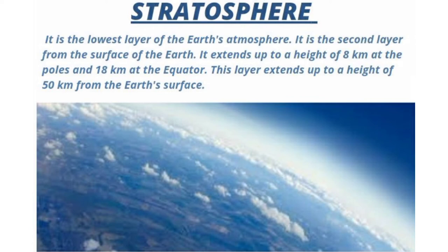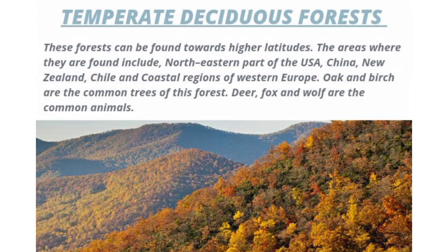Temperate deciduous forest. These forests can be found towards higher latitudes. The areas where they are found include the northeastern part of USA, China, New Zealand and coastal regions of western Europe. Oak and birch are common trees of this forest. Deer, fox and wolf are the common animals.